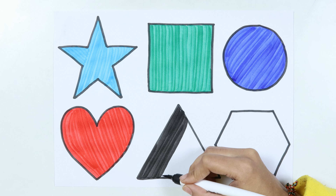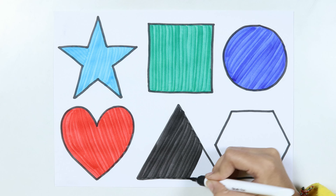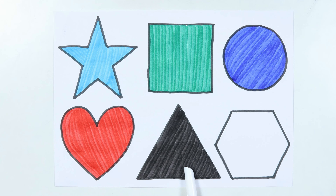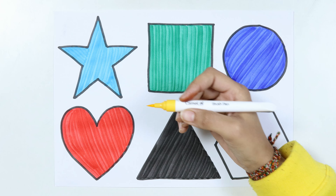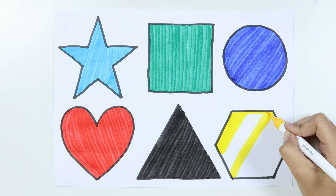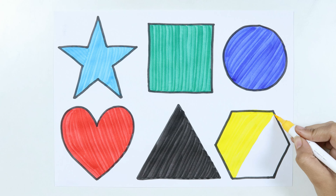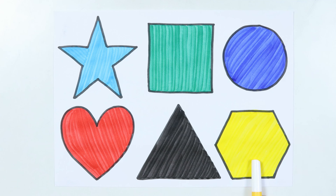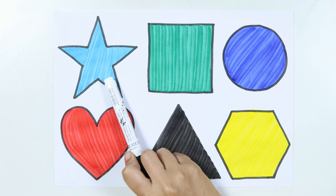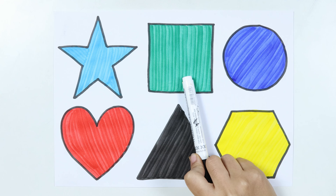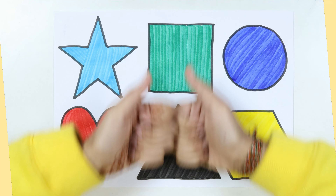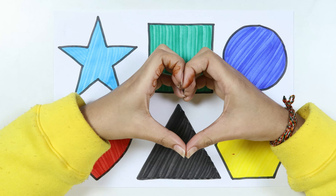Black color. Little star, how I wonder what you are, up above the stars. Square, yellow color. Like a diamond in the sky. Twinkle, twinkle. Hexagon. Star. Square. Circle. Heart. Triangle. Hexagon.